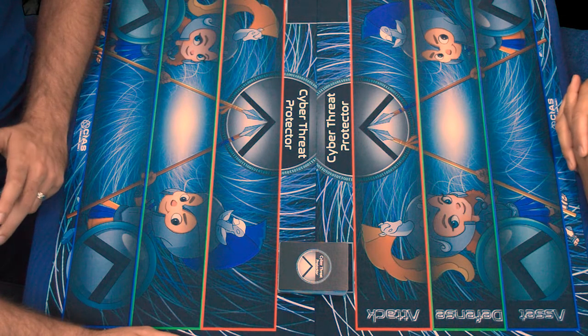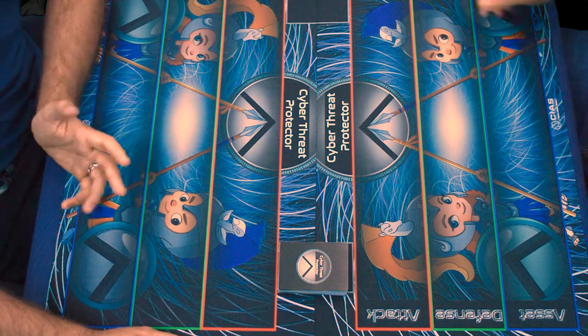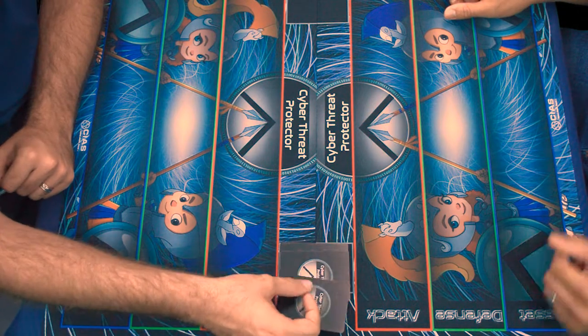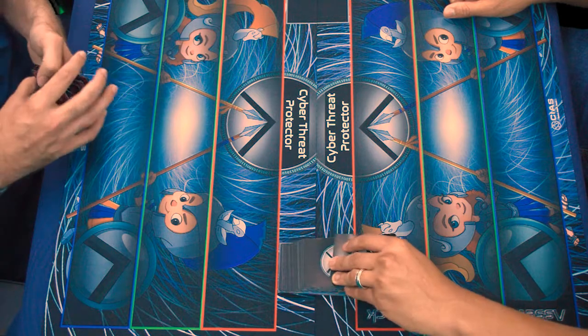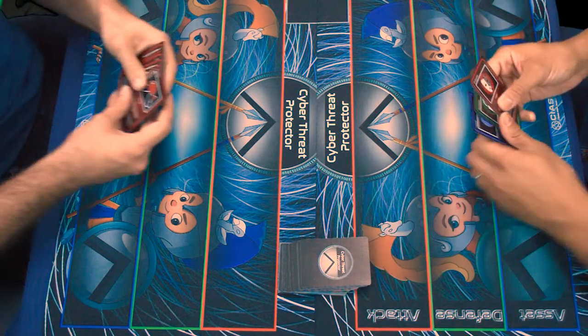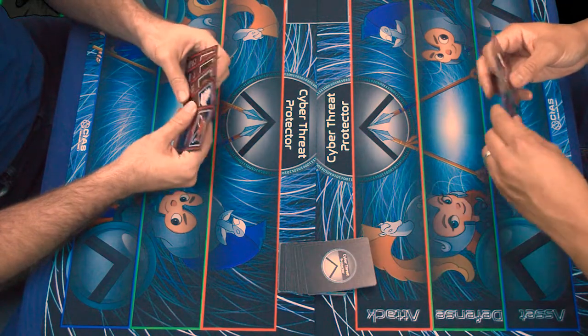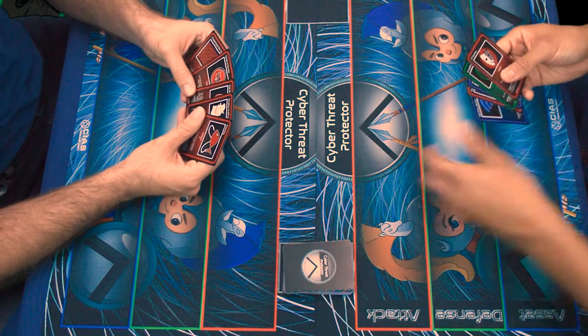All right, this is Cyber Threat Protector. We've pre-shuffled our deck, so let's begin. Both players start off by drawing five cards. And as player one, I get to play four cards for my first turn.